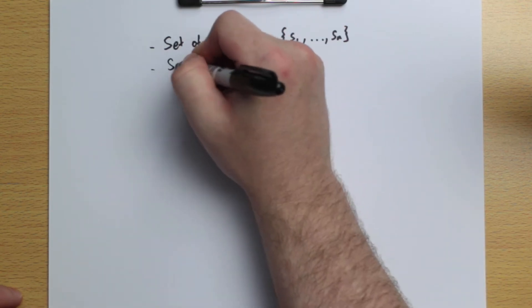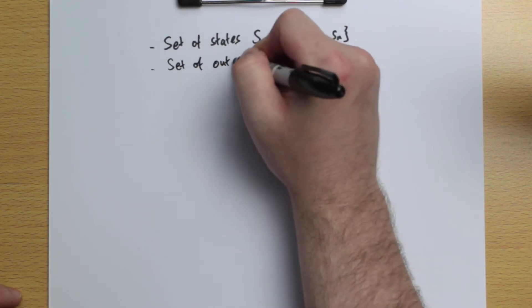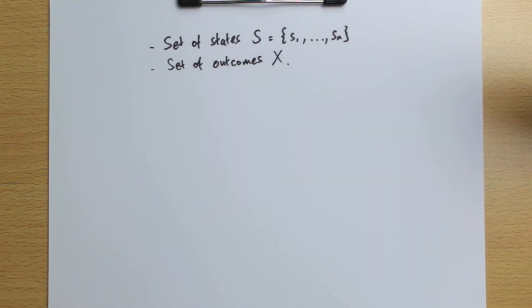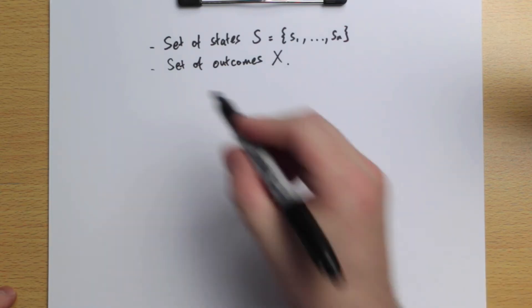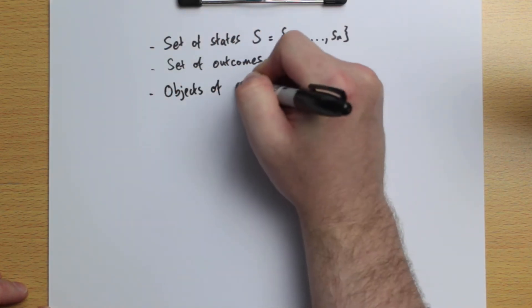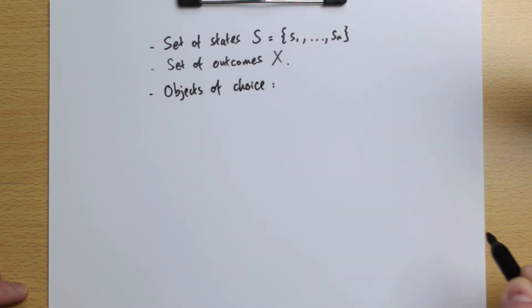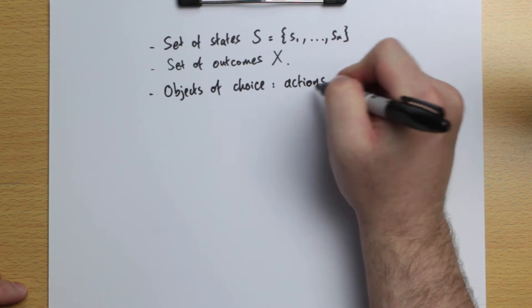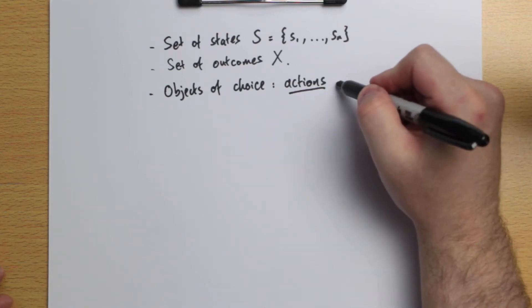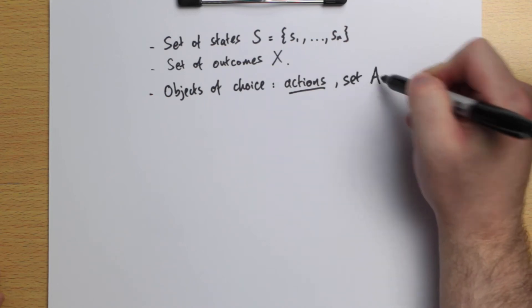For decision-making, we're also going to assume a set of outcomes — essentially the things that the decision-maker is interested in. We'll denote these capital X. You could think of these as amounts of money, but in general they could be anything. Now, what are the objects of choice for choice under uncertainty? We're going to call them actions today. Similar to what we called contracts before — sometimes these are called acts rather than actions. Actions is often used in game theory, so we'll use that today. We're going to have a set of actions, capital A.